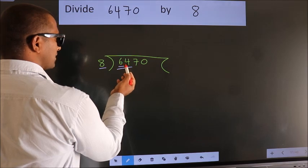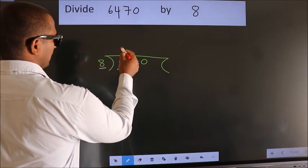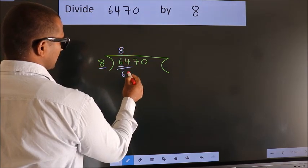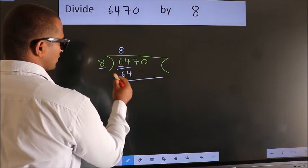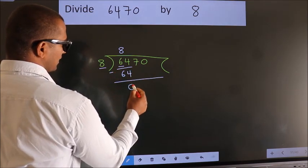When do we get 64 in the 8 table? 8 8s, 64. Now, we should subtract. We get 0.